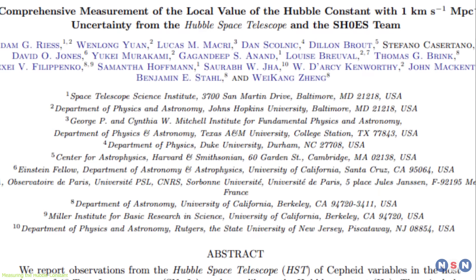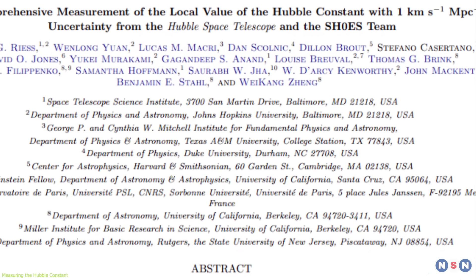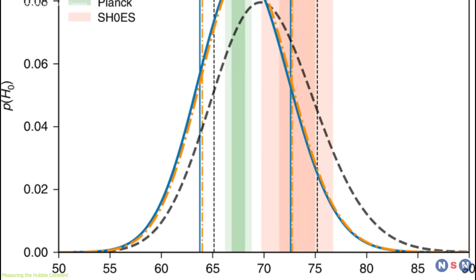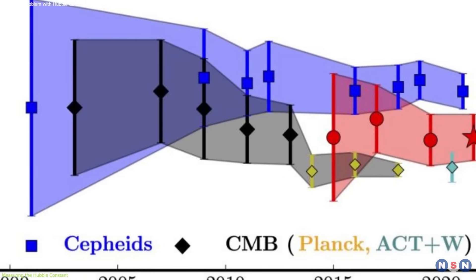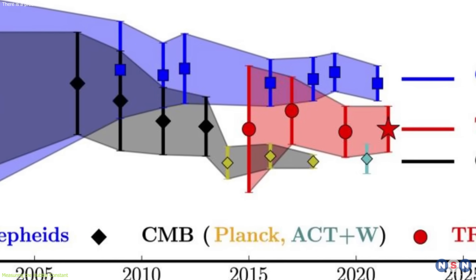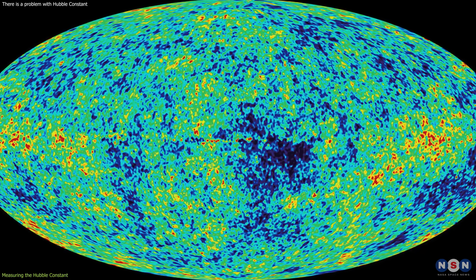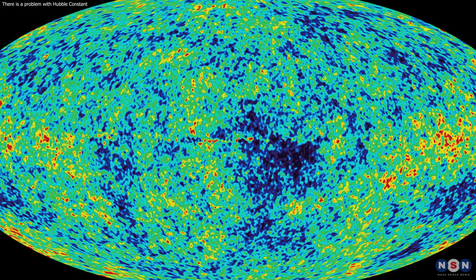This result is consistent with previous measurements by the same team, and it is also the highest value of the Hubble constant ever measured. But there is a catch. This value does not agree with the value predicted by another method, which uses the cosmic microwave background. And this is where the tension arises.